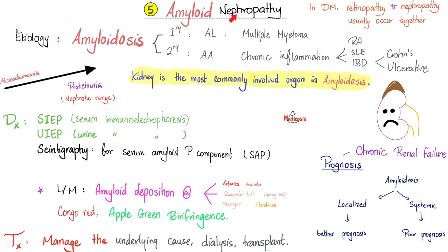Amyloid nephropathy: the patient has amyloidosis — could be primary or secondary. The kidney is the most commonly involved organ in amyloidosis. You have amyloid deposits in the arteries, mesangium, and capillaries. You have positive apple green birefringence on Congo red stain. You have to treat the underlying cause.